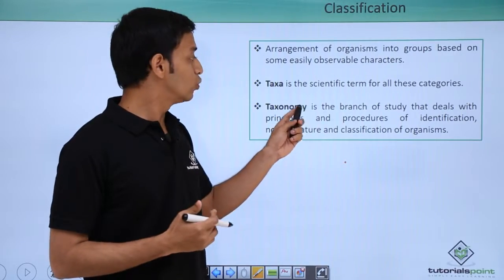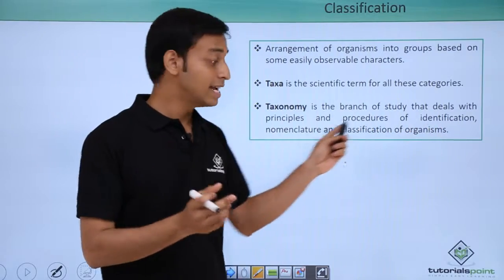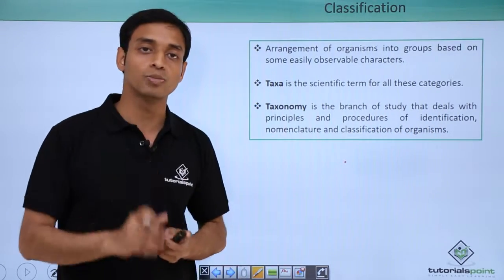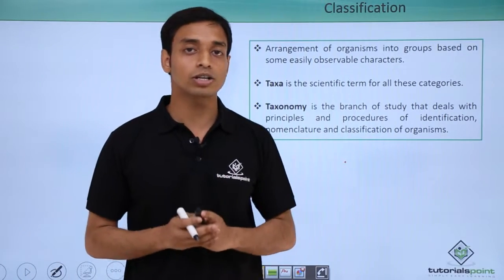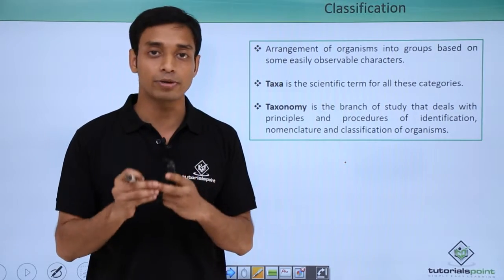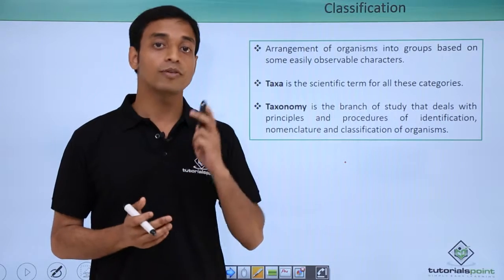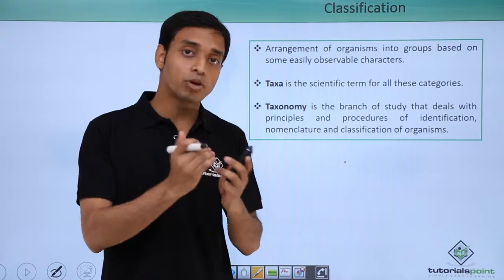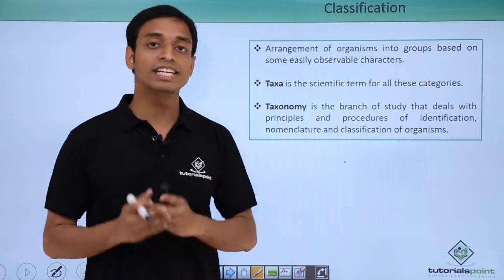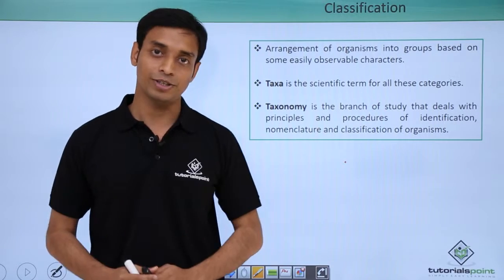The branch of science that deals with the principles and procedures of identifying, naming, and classifying organisms into groups is known as taxonomy. In this video we have talked about nomenclature, the two types of nomenclature — vernacular and binomial — some of the codes for binomial nomenclature, important rules for scientific naming, and the need for classification. Thank you.